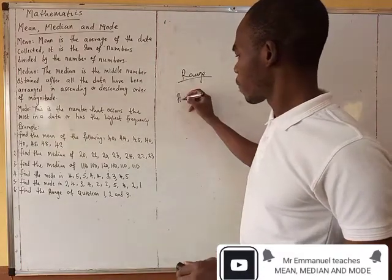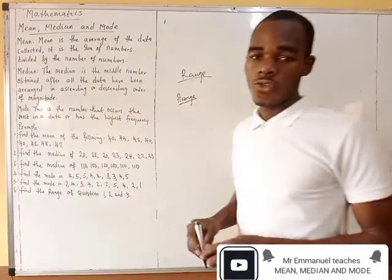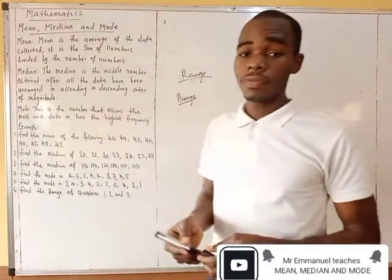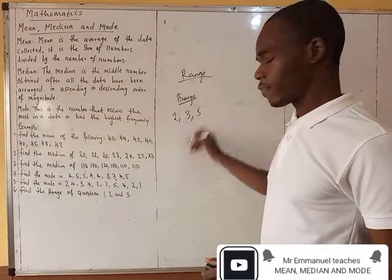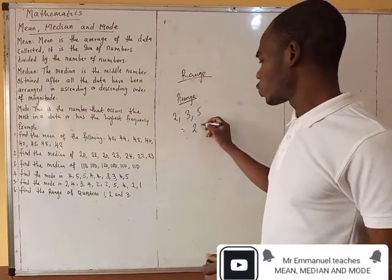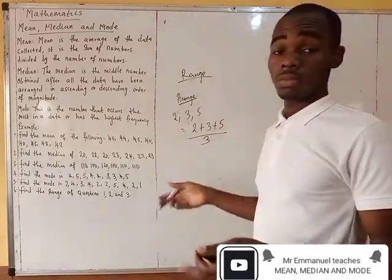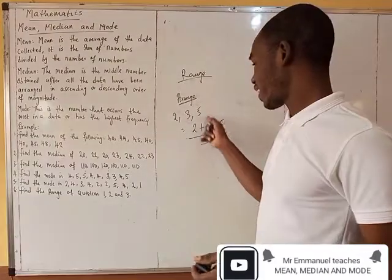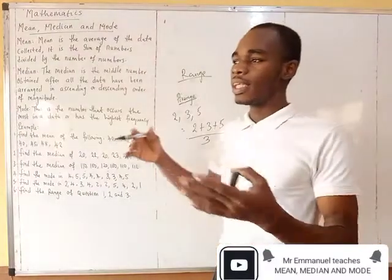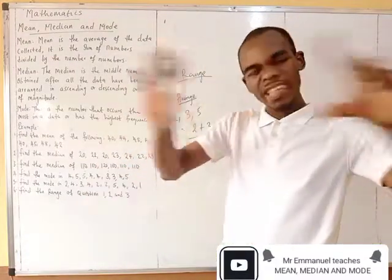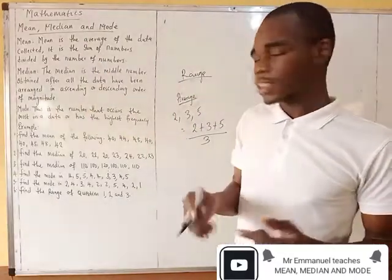I'm sure some of you are very conversant with this word: average. Some of you know what average is. Now, average — if I ask you to find the average of 2, 3, 5 — what I'm asking you to do is 2 plus 3 plus 5. How many are you? 1, 2, 3 — divided by 3. Add it, divide it by — that's what average is. And this is what mean means. Mean is a system of collection of data whereby you have to add all the numbers, then divide it by the number of numbers you have. That is mean for you.